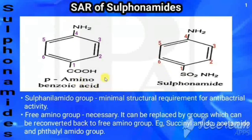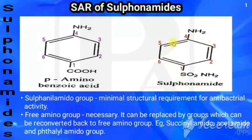The sulfanilamido group consists of a benzene ring with NH2 in the fourth position and SO2NH in the first position. This is the minimal structural requirement for antibacterial activity of all the sulfonamides. The free amino group at the fourth position is very important.